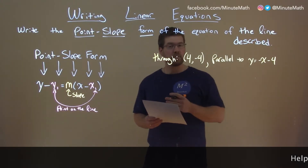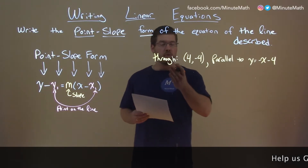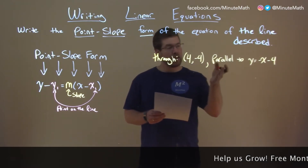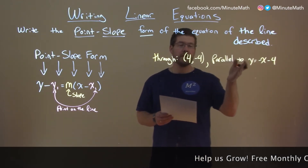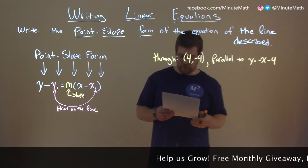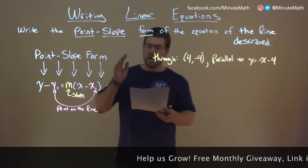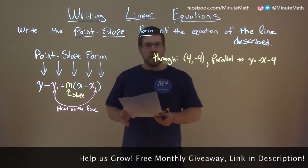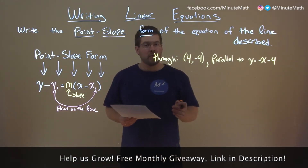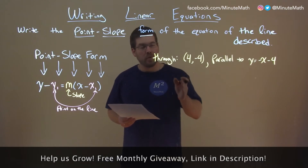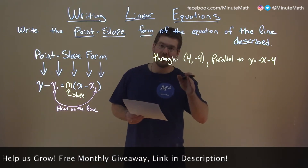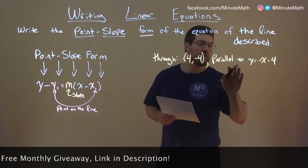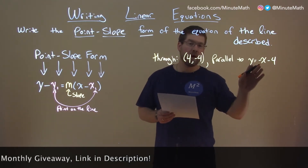If I was given this problem: through 4 comma negative 4, and is parallel to y equals negative x minus 4, we want to write this in point-slope form. A point-slope form has a point and a slope. We're given a point; we need a slope. The slope, they tell us, is parallel to this line.